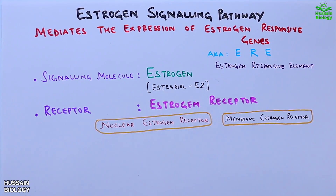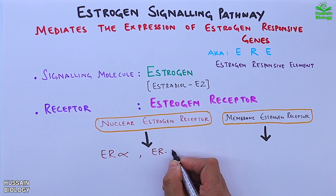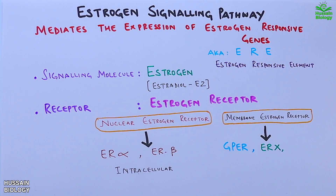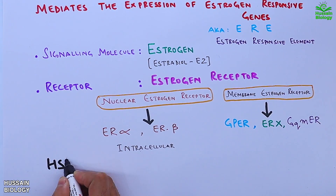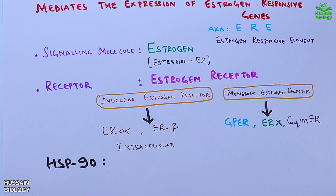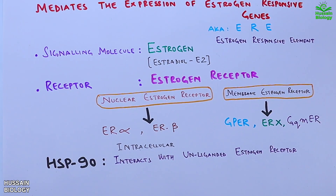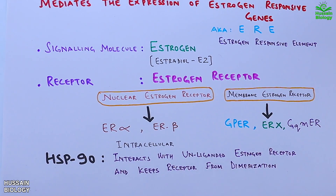In nuclear estrogen receptors we have ERα and ERβ — estrogen receptor alpha and estrogen receptor beta — both are intracellular receptors. For membrane estrogen receptors we have GPER, ERX, and GQMER. We also have HSP90, which interacts with the unliganded estrogen receptor and keeps the receptor from dimerizing, maintaining it in its inactive state.